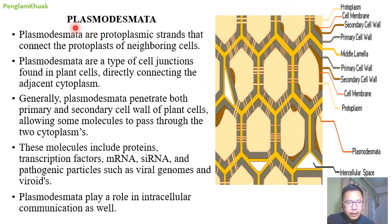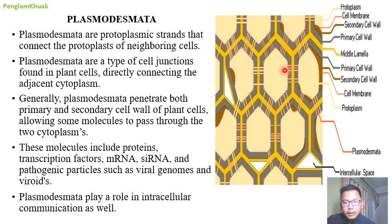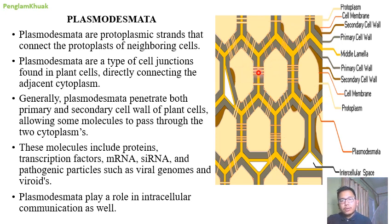One of the most important topics is plasmodesmata — I call it a door. These are small openings between two adjacent plant cells through which cells communicate, pass information, or transfer nutrients, proteins, and DNA. Plasmodesmata are protoplasmic strands that connect the protoplasts of different neighbors. They are a type of cell junction found in plant cells directly connecting the existing cytoplasm between two adjacent plant cells. Generally, plasmodesmata penetrate both primary and secondary cell wall and middle lamella.